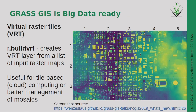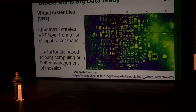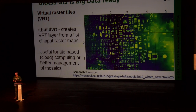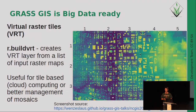Now a block on GRASS GIS being big data ready — that's a buzzword, of course, but many of us struggle with the problem that data are growing non-linearly. If you take the Landsat archives, they were already pretty big. Now with the Copernicus Sentinel archive, it goes into the multi-petabyte range. If you do high-resolution orthophoto analysis, land-use mapping, or drone data processing, you end up easily with lots of data.